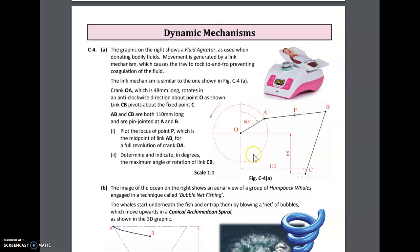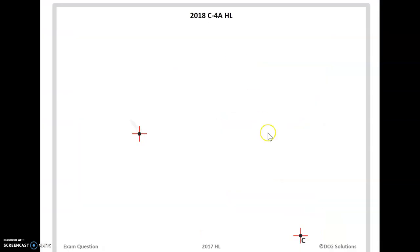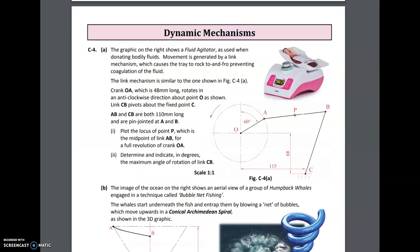So A is going to be moving around here in the circle, and CB is going to move forward and back. We need to plot the locus for point P. We have our point C here; this is going to be the center of our circle on the left-hand side. Drawing our circle, we draw point A and get the distance.